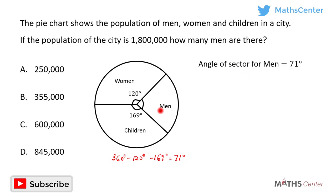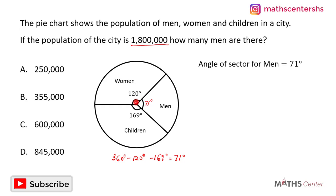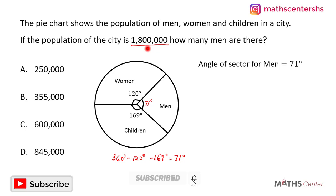So the angle of the sector occupied by the men is 71 degrees. In the question, we have been told that the population of the city is one million eight hundred thousand. This means that if we add the number of women, men, and children we get one million eight hundred thousand. So the total angles in the circle — 360 degrees — represent one million eight hundred thousand people.